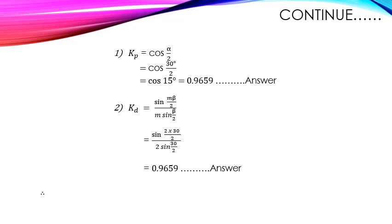Calculating the pitch factor: kp = cos(α/2) = cos(15°) = 0.9659. Then calculating the distribution factor by substituting m and β into the equation, we get kd = 0.9659. Both the pitch factor and distribution factor are 0.9659.